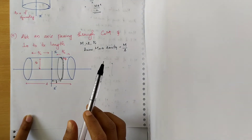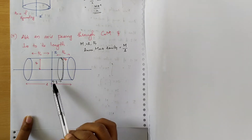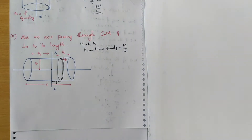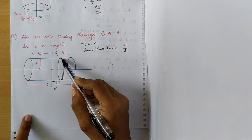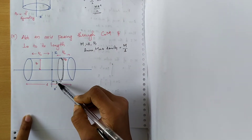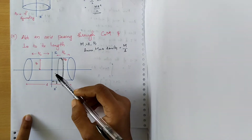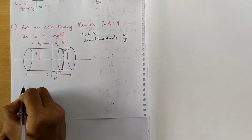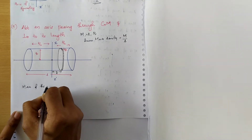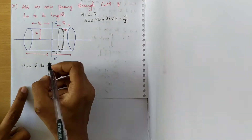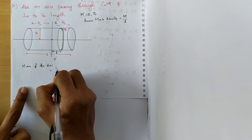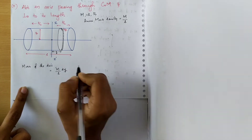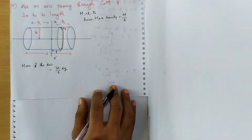To find the moment of inertia of this cylinder when we rotate it about axis ZZ prime, we assume the cylinder is made up of a large number of consecutive discs. We consider one such disc having a thickness dy, located at a distance y from the ZZ prime axis. The mass of this disc equals the mass per unit length into the thickness dy, giving mass = M/L · dy.